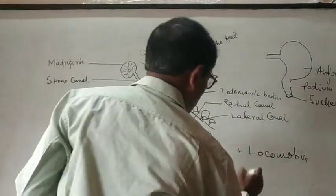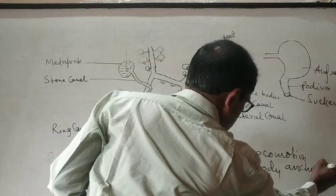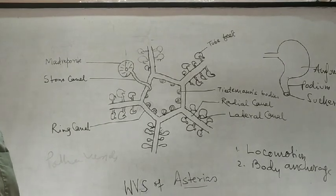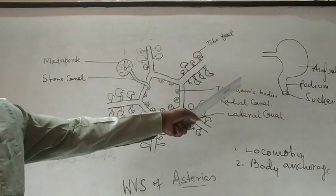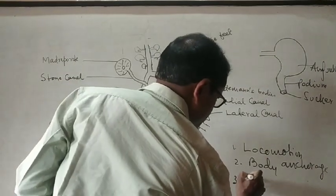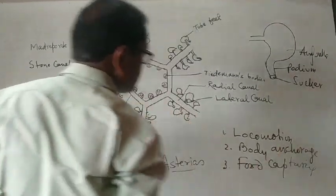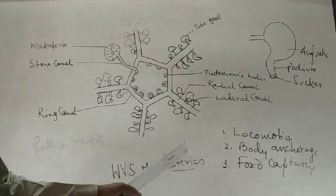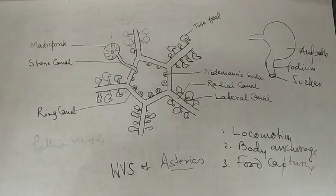Second one, body anchorage. That means, at any substratum, it can anchor itself on the substratum. And that is also performed by that structure, tube feet, with the help of its suckers. Now, third function is food capturing. The organism uses suckers to capture the prey and consume it during its feeding.